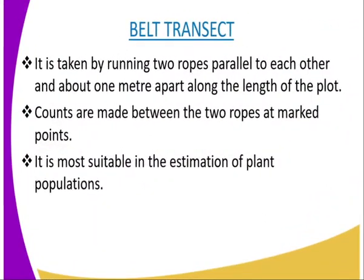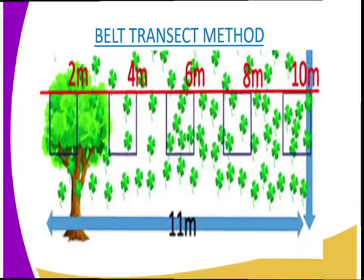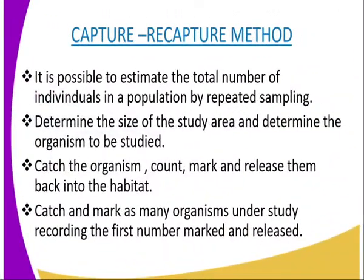We are going to have our third method of population estimation, which is known as the capture-recapture method. In this method, it is possible to estimate the total number of individuals in a population by repeated sampling. After selecting the study area, determine its size and choose the organisms to be studied. Select an appropriate technique for the organisms' capture. Catch the organisms, count, mark and release them back into the habitat. Catch and mark as many organisms under study, recording the first number marked and released.